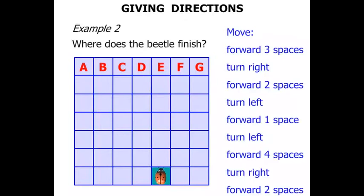So starting there. Forward three spaces. One, two, three. And then the beetle turns right. Okay, watch the beetle turn right. There we go.